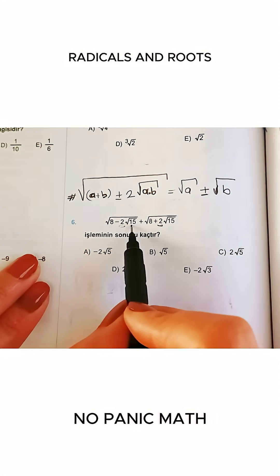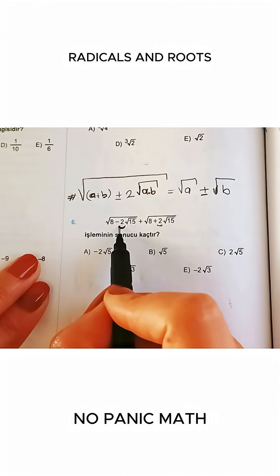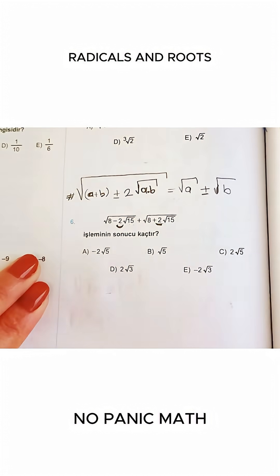Pay attention. There are two nested roots, and if there's a 2 in front of the inner radical, we use this rule. Are we clear?